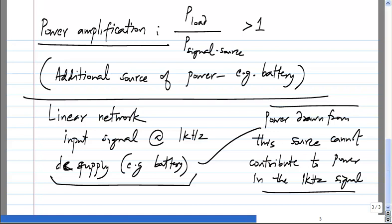You can touch the amplifier and it will be quite hot — it dissipates power. This basically motivates the need for non-linear circuits and, of course, their analysis.